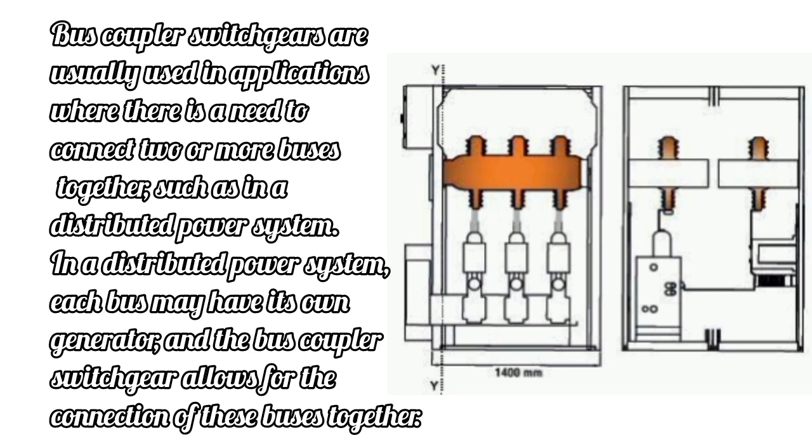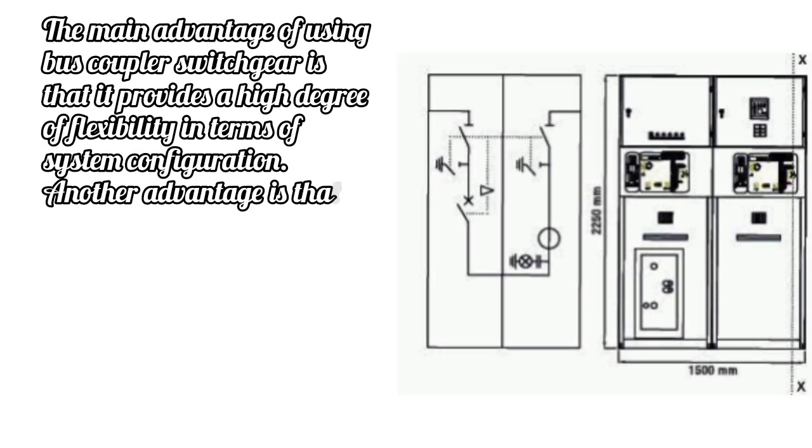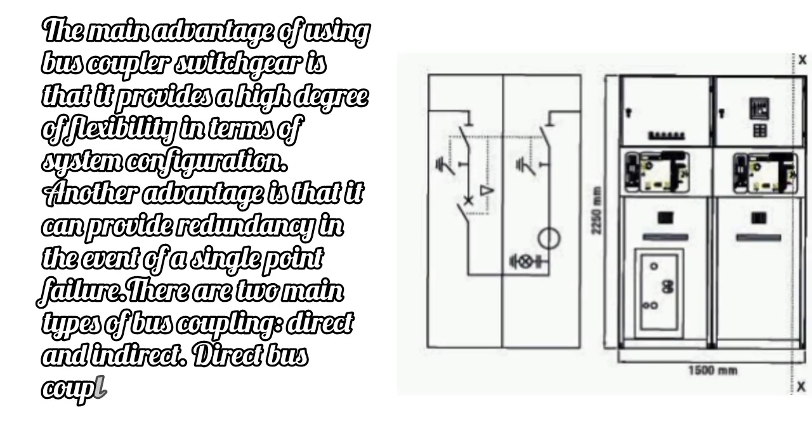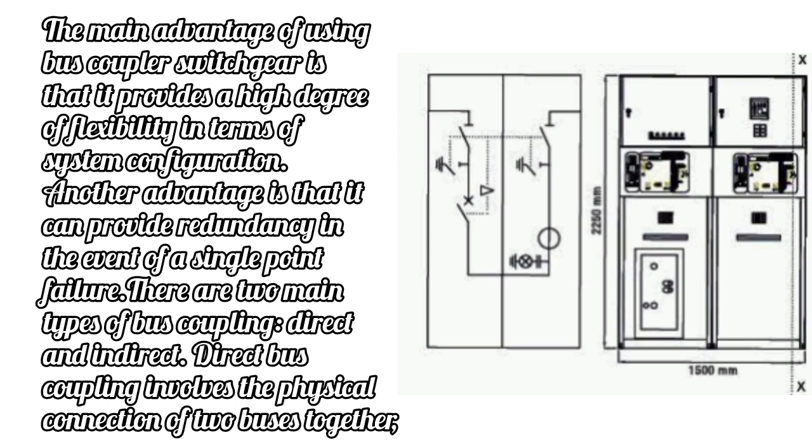In a distributed power system, each bus may have its own generator, and the bus coupler switchgear allows for the connection of these buses together. The main advantage of using bus coupler switchgear is that it provides a high degree of flexibility in terms of system configuration. Another advantage is that it can provide redundancy in the event of a single point failure.